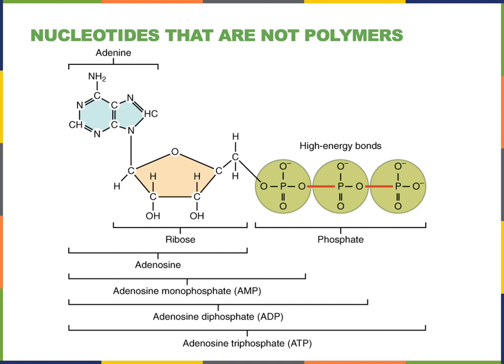ATP has three phosphates. If one phosphate is released, then ATP is converted to ADP, adenosine diphosphate. One more phosphate could be released and ADP would be converted to AMP, adenosine monophosphate.